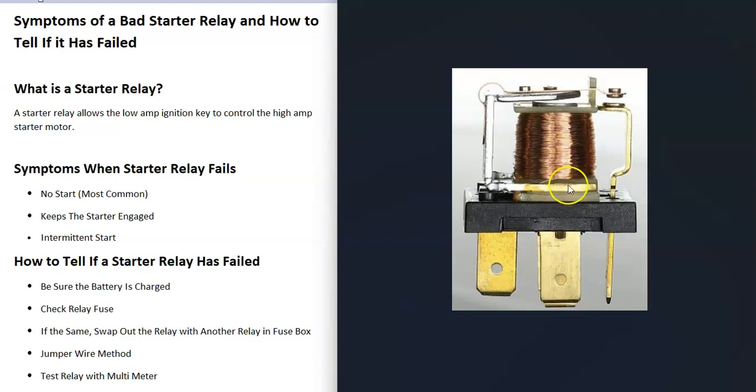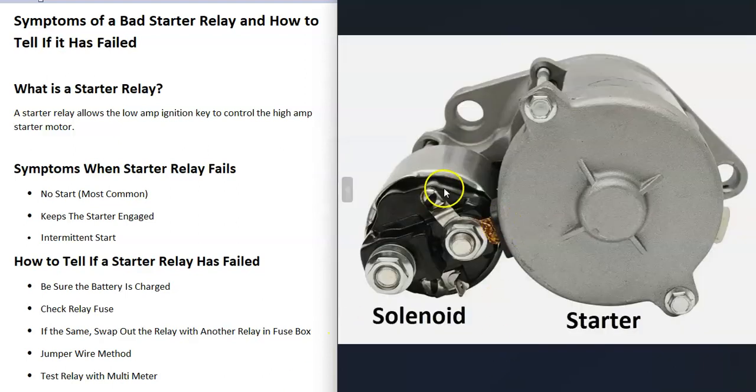The wires going to the coil from the ignition key are much smaller compared to the wire going to the starter. When this gets energized, it closes the contact, completes the circuit, and power goes to the starter solenoid, which spins the starter.